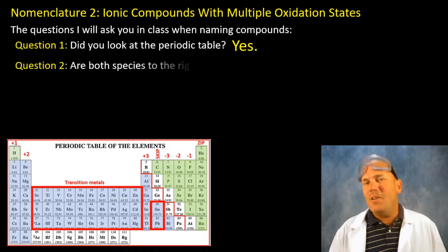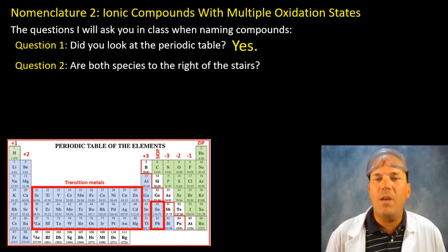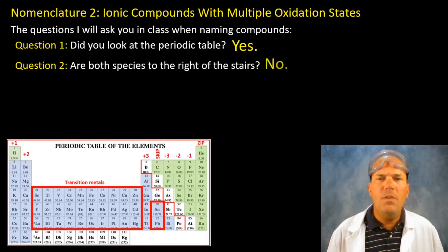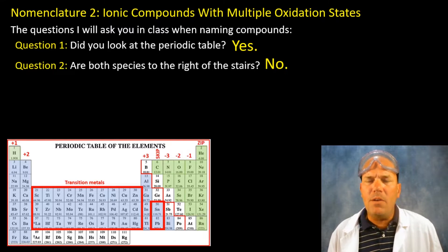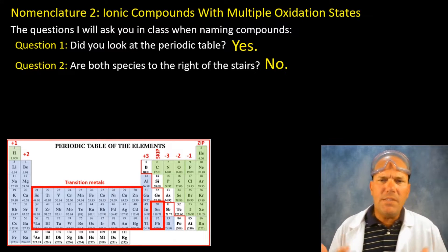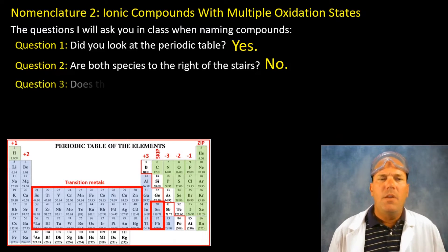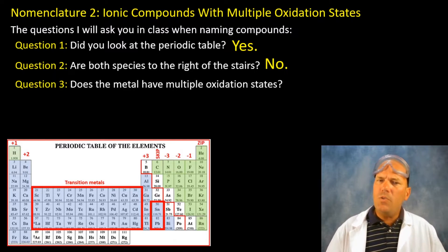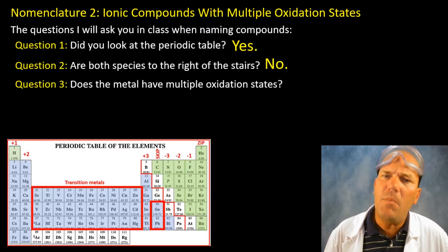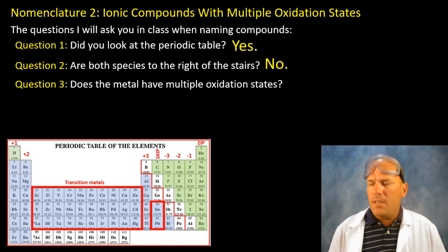And then my next question: are both species to the right of the stairs? No, one is to the right one is to the left. One is a non-metal one is a metal, this is an ionic compound which means that we're naming ionic compounds and the new question does it have a multiple oxidation state?